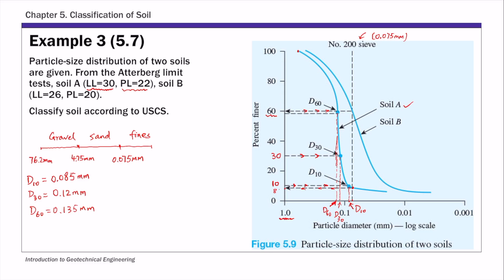The first coefficient is the coefficient of uniformity, Cu, defined as D60 divided by D10. Substituting the values read from the curve gives Cu of approximately 1.59. The second is the coefficient of gradation, Cc, defined as D30 squared divided by the product of D60 and D10. That value is 1.25. We'll come back to these two values when determining the gradation of the soil.